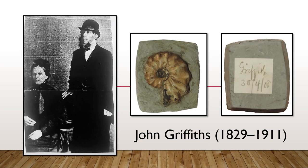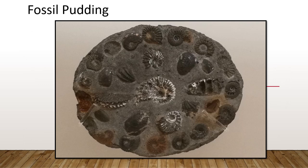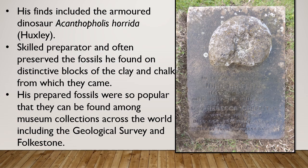One thing you'll notice about Griffiths' specimens is a distinctive style of preparation — squared-off blocks of clay — and they are often very distinctive. On the left is a photograph of John with his wife Rebecca. Here is one of John's famous fossil puddings, which we think he made to sell to tourists using less prized specimens, placed into cement material and baked. Here is a photo of John and Rebecca's gravestone in the cemetery opposite Morrison's in Folkestone. He also found a dinosaur called Acanthopholis horridus, described by Henry Huxley — Darwin's bulldog.